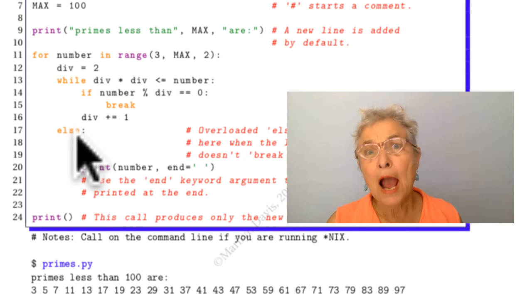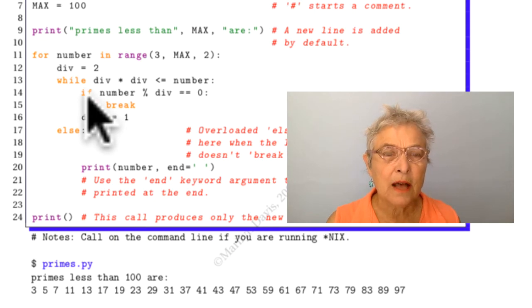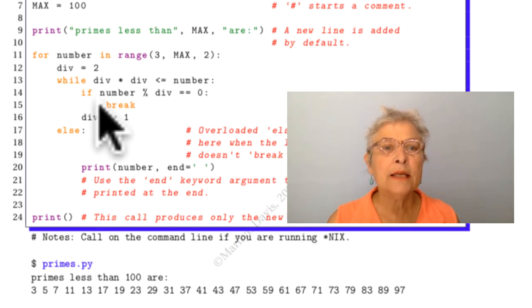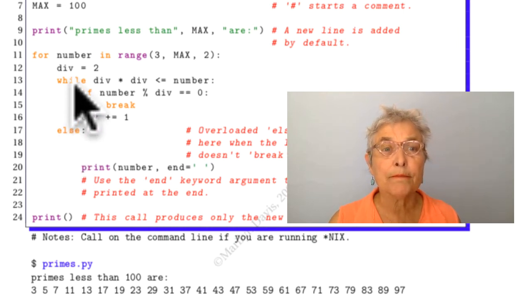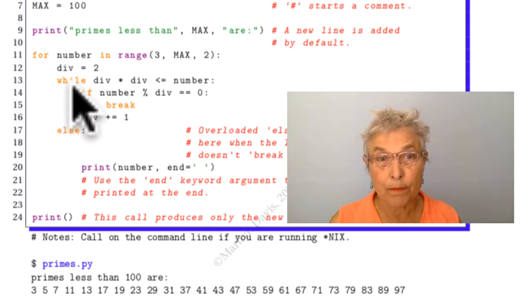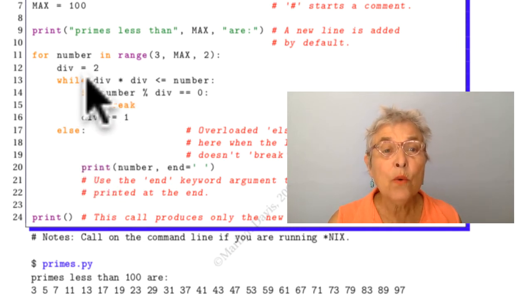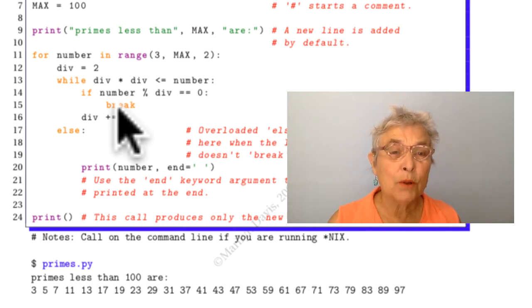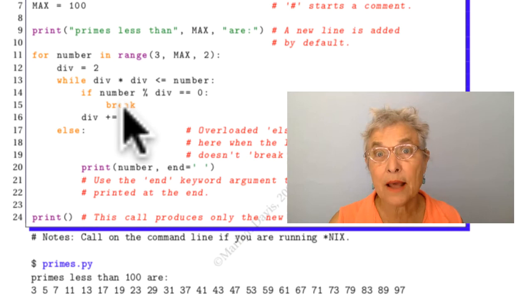Now then, your habit when you see an else is to look backwards to the last if and figure that this else means that if this is false, go in there, but not in Python. Indentation is everything in Python. When you see the else, you go straight up to see what's up there. This else is part of the while mechanism. When this becomes false, it goes in the else. The other way out of this loop is to break. If this becomes true, we're going to break.